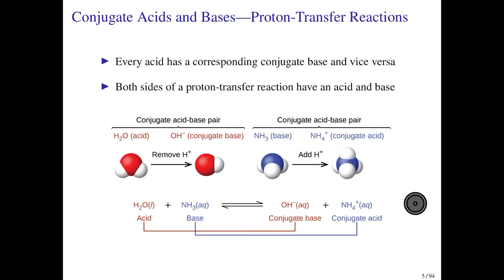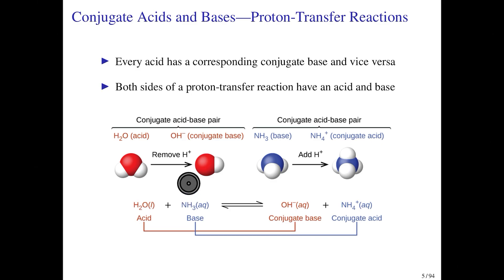Every acid in a proton transfer reaction has a corresponding conjugate base, and vice versa — every base has a corresponding conjugate acid. There is an acid and a base on each side of the reaction. Looking at the ammonia dissociation reaction, as you go from reactants to products, water acts as the acid — it donates a proton to ammonia, the base. You can also think about this reaction in reverse, where ammonium donates a proton to hydroxide, giving back ammonia and water.